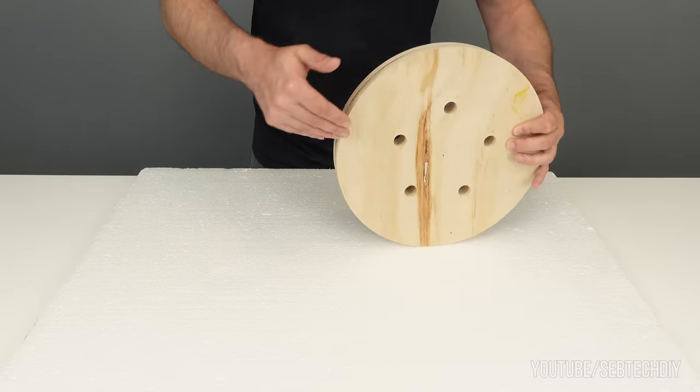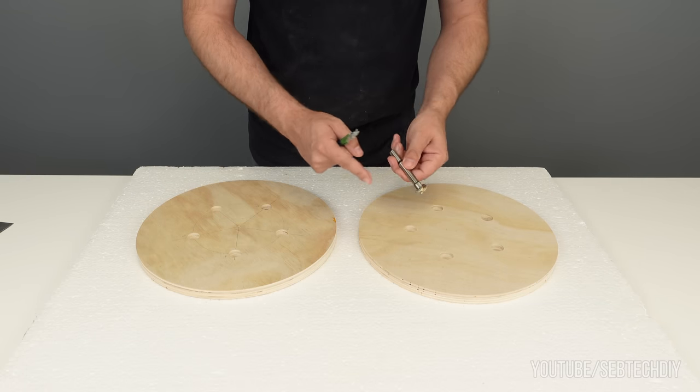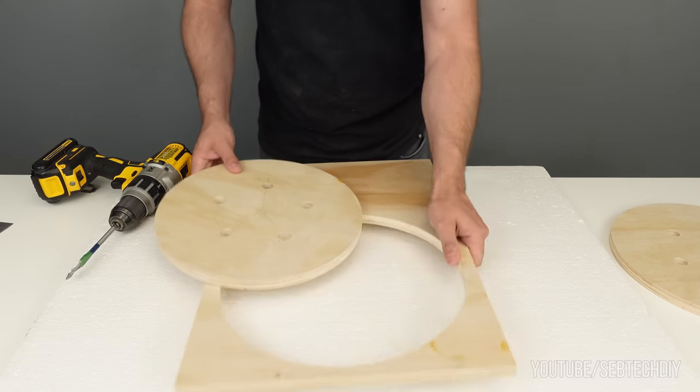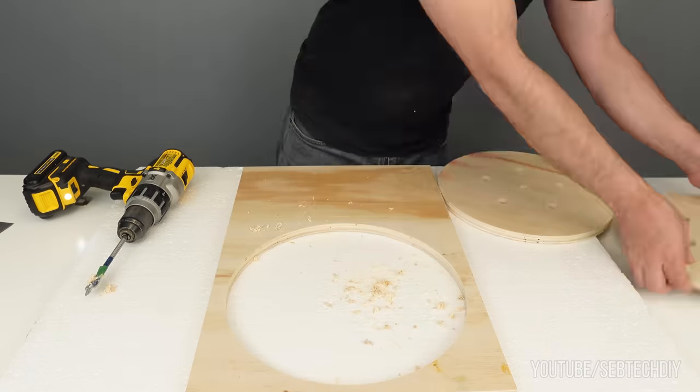But for now I need to enlarge center holes on both pieces. One is 5/8 and the other one is 3/4. Forstner bits are better for that, but I gotta use what I have on hand.